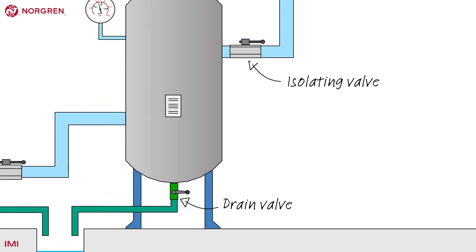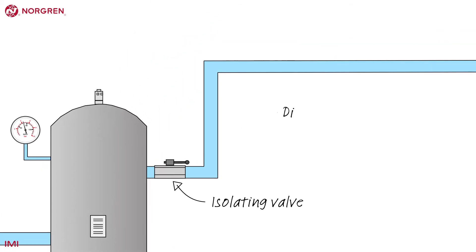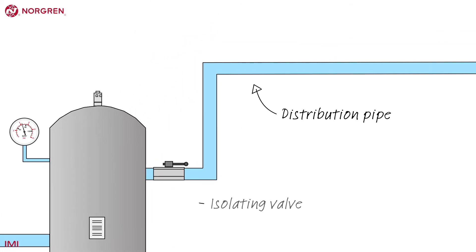The isolating valve allows the supply of air to be disconnected from the ring main. The distribution pipe allows all the energy stored in the air to circulate through the system.